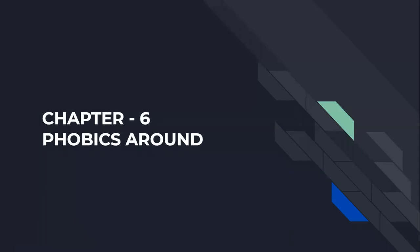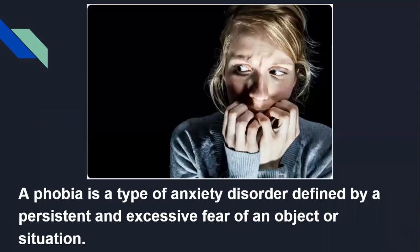All of us are afraid of something or other. Some are afraid of darkness, some of light and many other things. The fear of something is called phobia. In this chapter, we will learn what the fear of some particular thing is called. Let's start with phobia. A phobia is a type of anxiety disorder defined by a persistent and excessive fear of an object or situation.